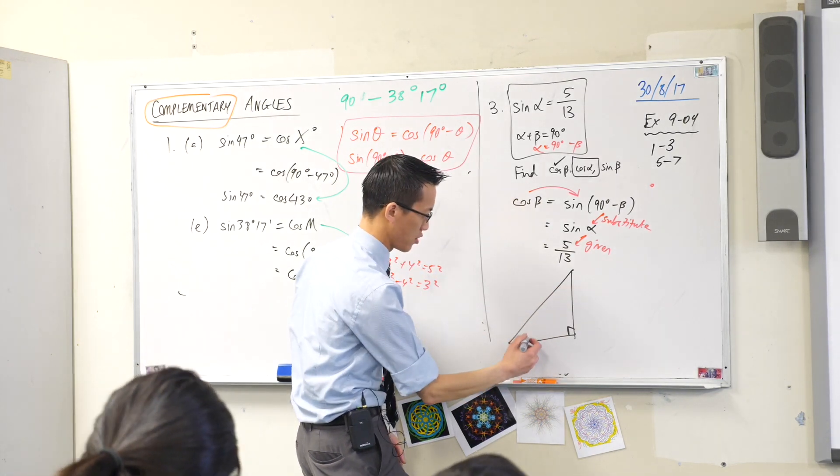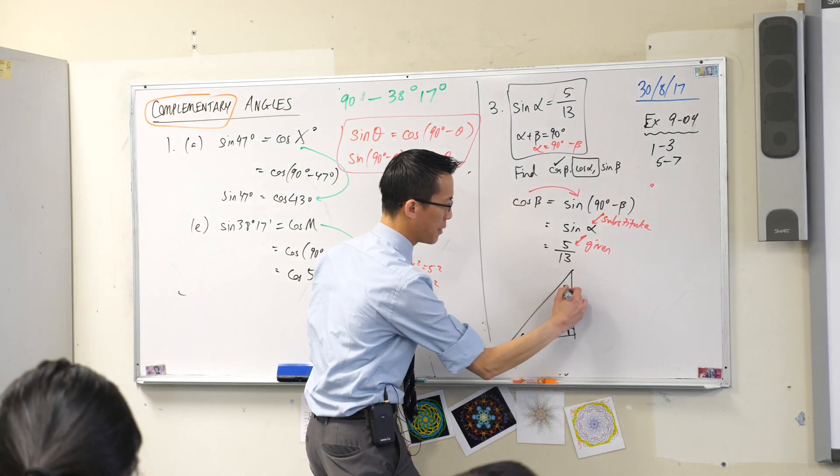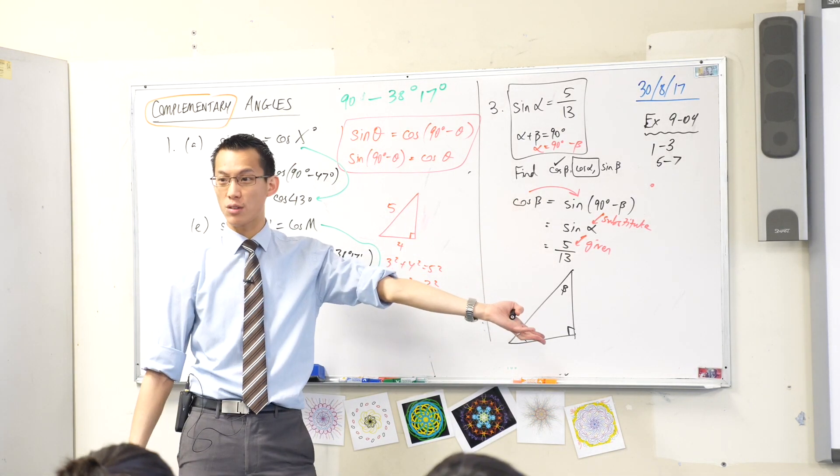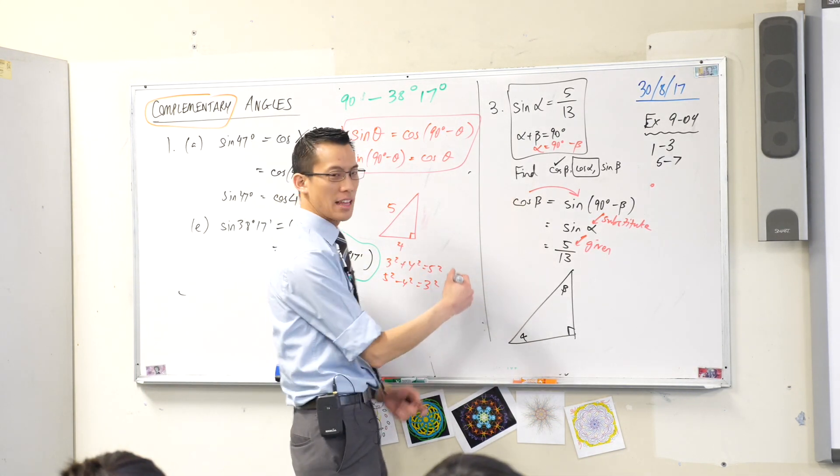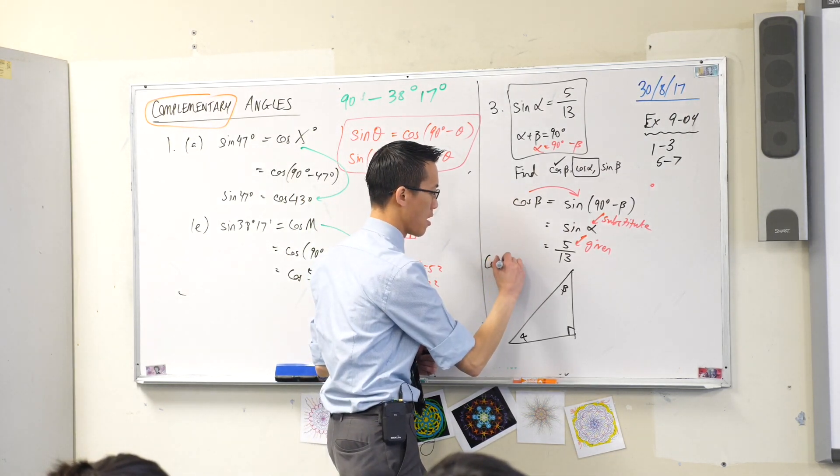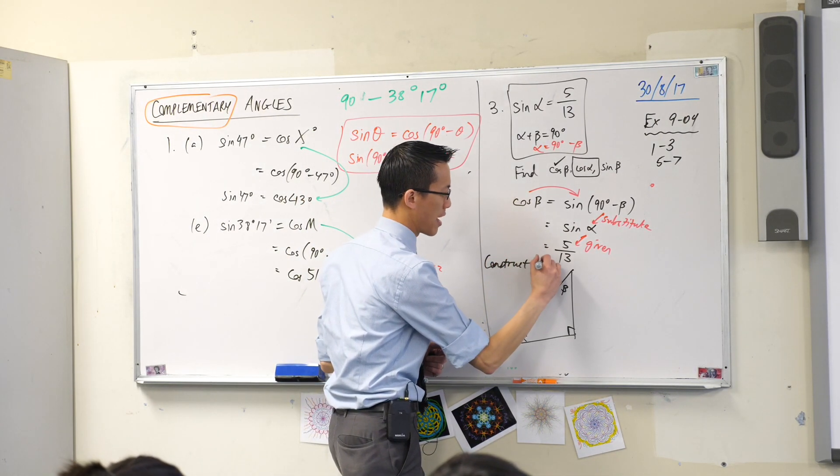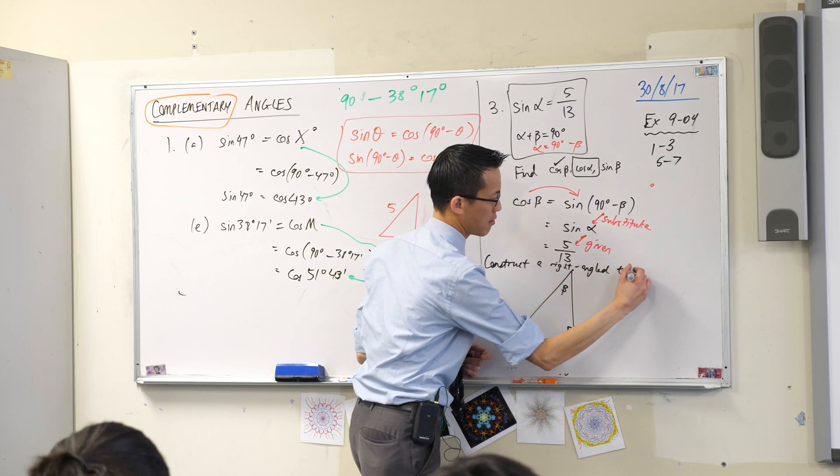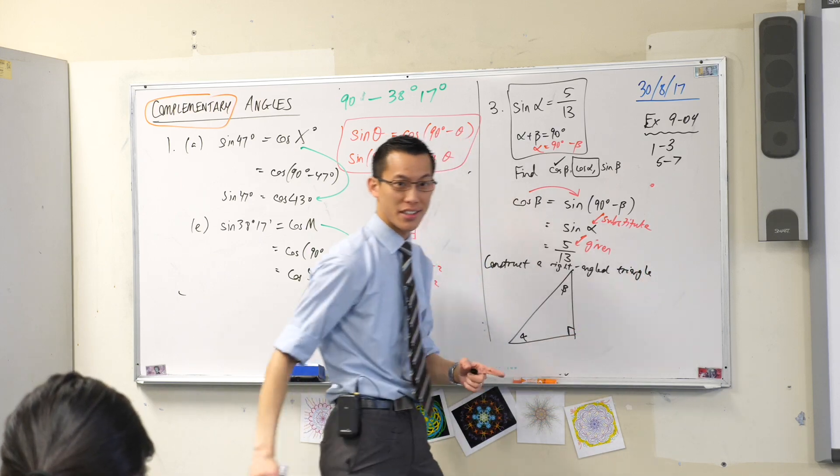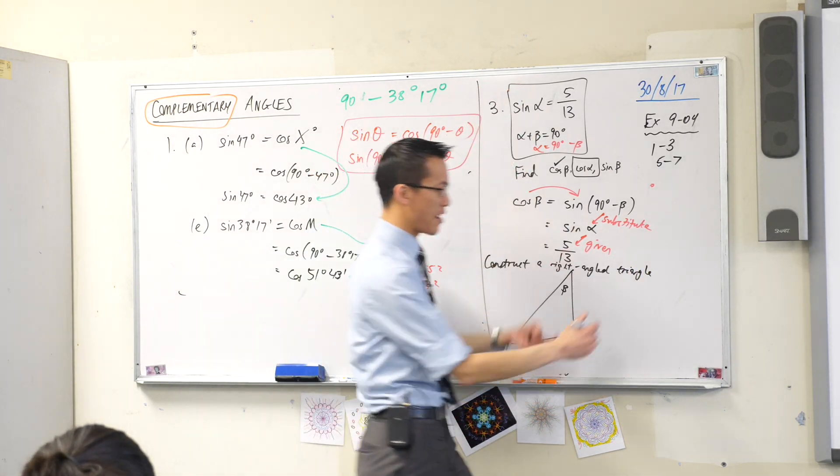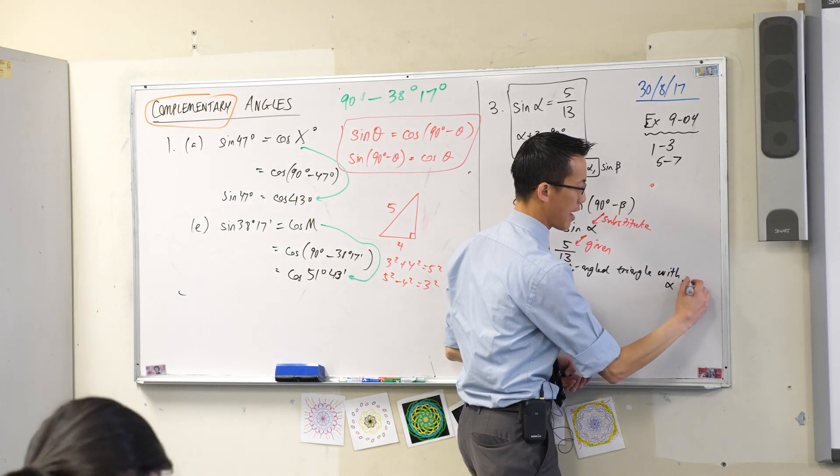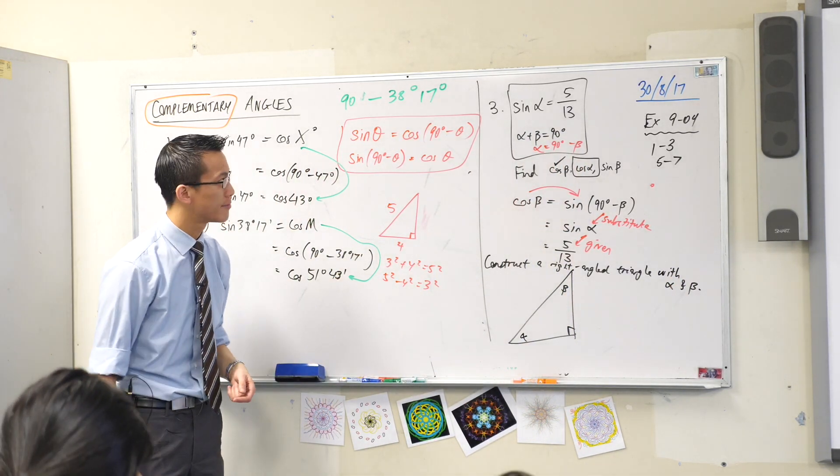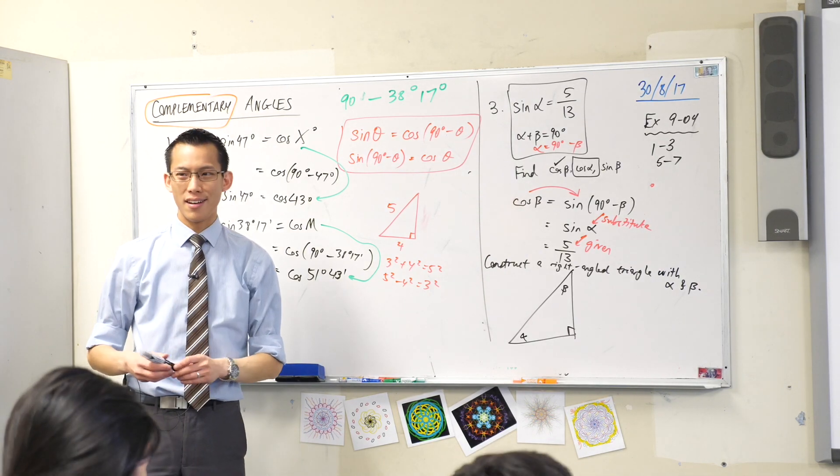If I make this, which one am I going to choose? Alpha and beta. Do you see here alpha and beta add up to 90 because they're in a right-angled triangle? Let me just write for your sake what I'm doing. I'm going to construct a right-angled triangle, and I'm going to construct it with the angles I've been provided with, alpha and beta. There it is.